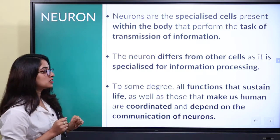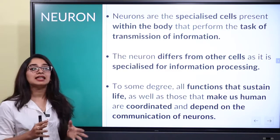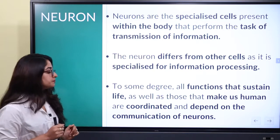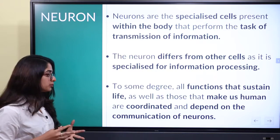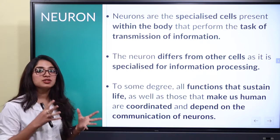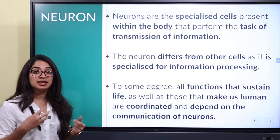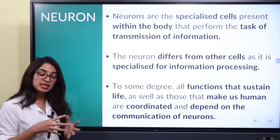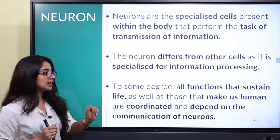How does a neuron differ from other cells? It differs because information processing is its specialization. To some degree, all functions that sustain life as well as those that make us human are coordinated and depend on the communication of neurons. How neurons communicate determines how we can sustain our human life.